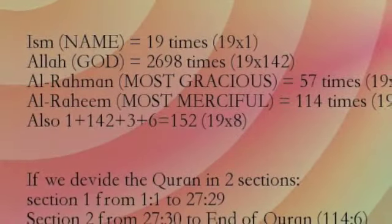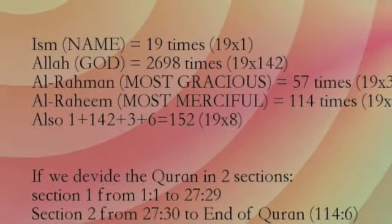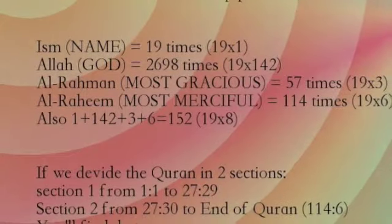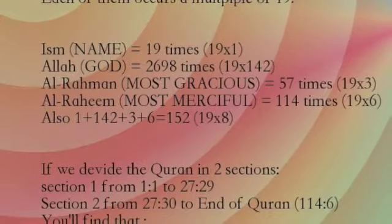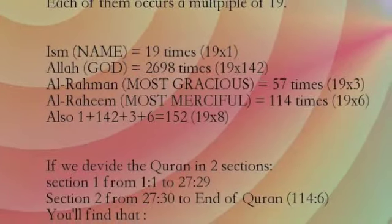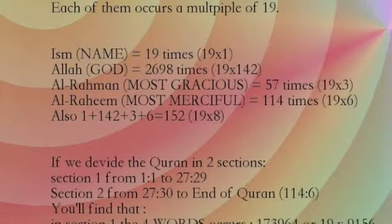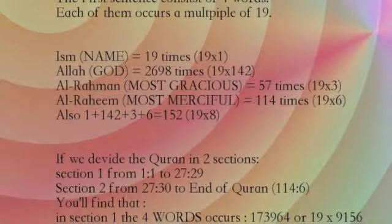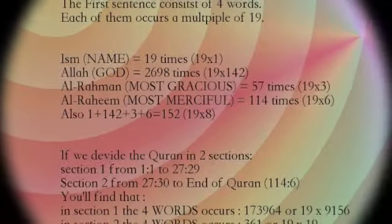By dividing the Quran into two sections separated by the numbered Basmala, you find that the four words occur in each section as a multiple of 19. In section 1, the four words occur 1,938 times, or 19 times 102. In section 2, the four words occur 950 times, or 19 times 50. And 19 plus 2,698 plus 57 plus 114 equals 2,888, which equals 1,938 plus 950, equals 19 times 152.